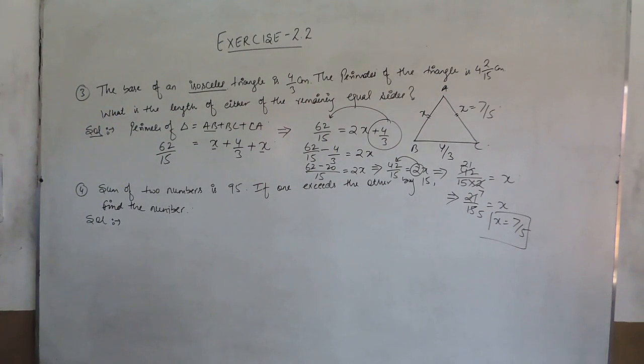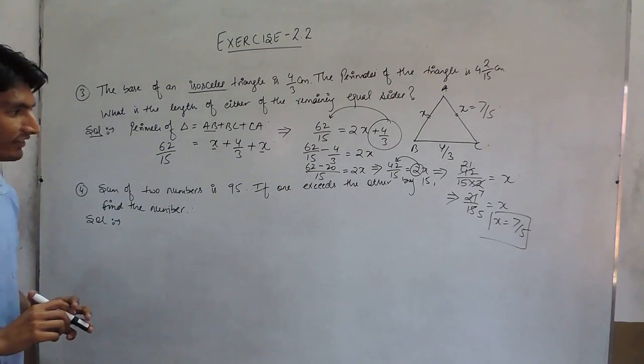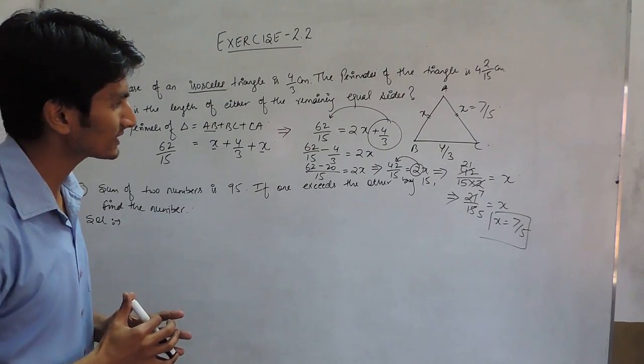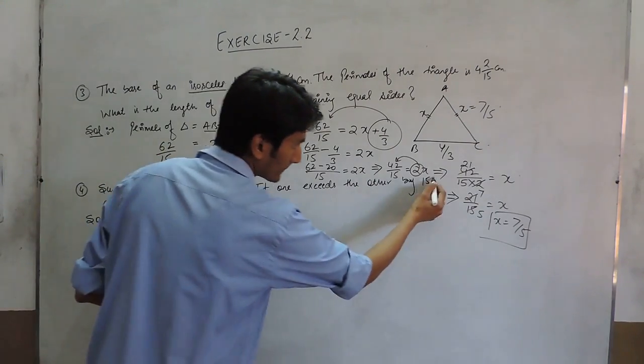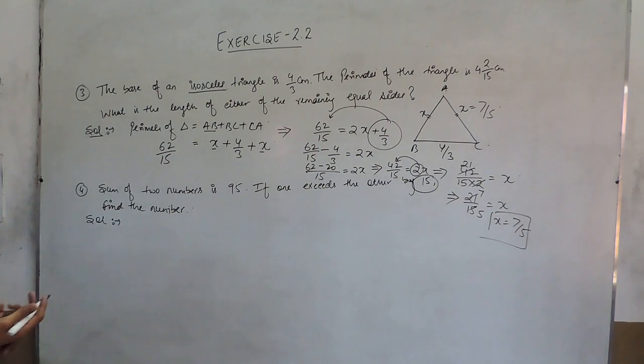The next question, sum of two numbers is 95. If one exceeds the other by 15, find the number.